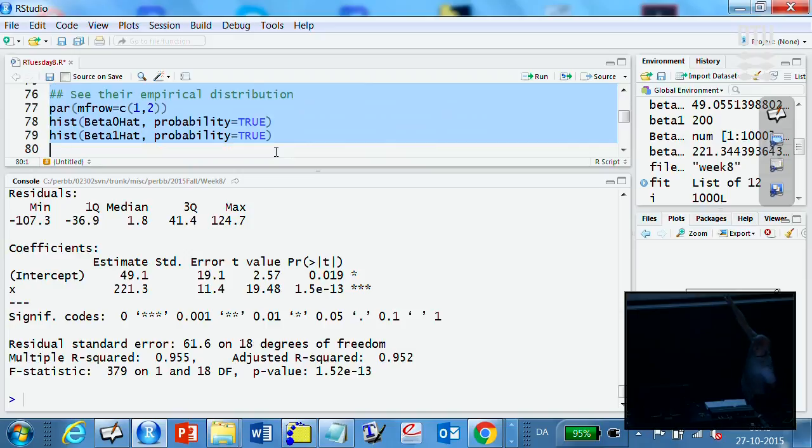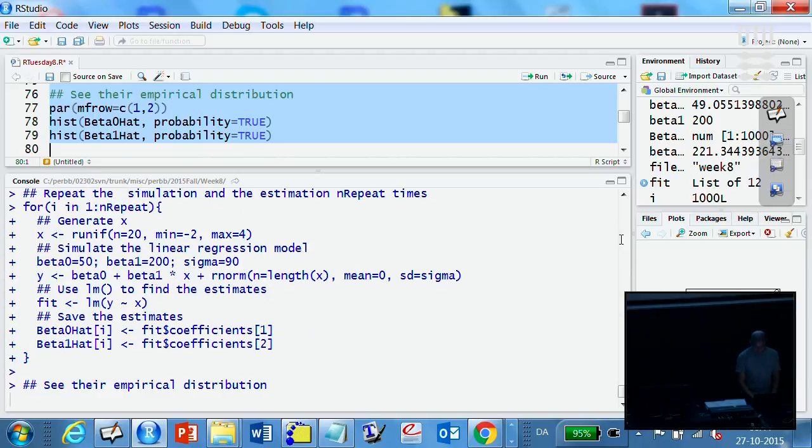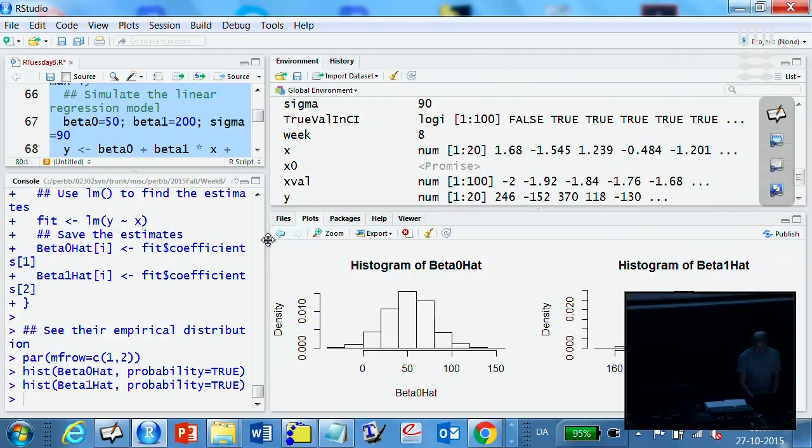Let me look at the thousand computed slopes and intercepts. There is a distribution of intercept and a distribution of slopes. Beta one is the slope. The slope seems to go with an average around 200 but then plus minus 30 or something. There is sampling variability of the intercept and slope.